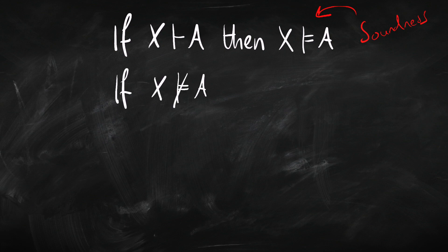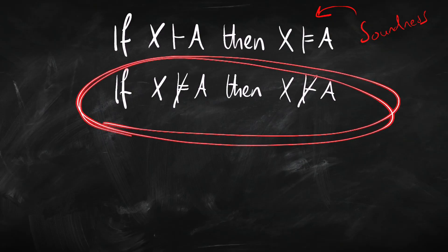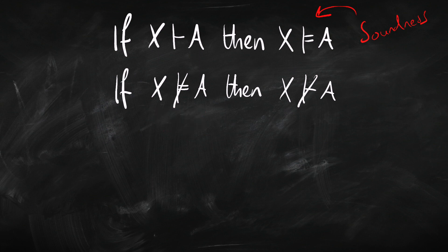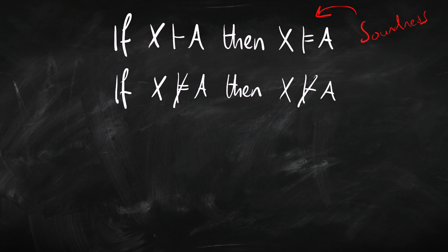Whenever we're trying to prove soundness or completeness, a good first step is taking the contrapositive. In the case of soundness, writing a slash through a symbol means it doesn't hold. So the contrapositive of soundness says: if we don't have an entailment from X to A, then we can't prove it. That pretty obviously means the same thing as soundness — if I prove it then it's true, so if it's not true I can't prove it.